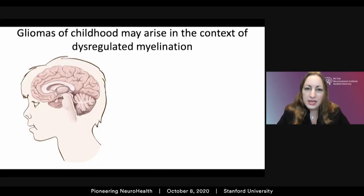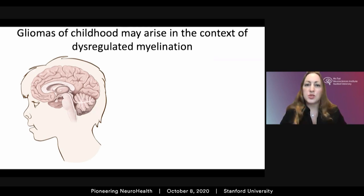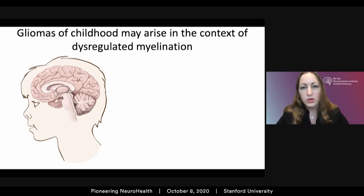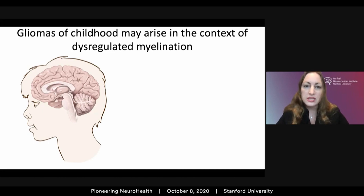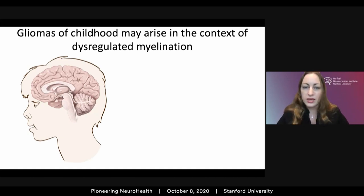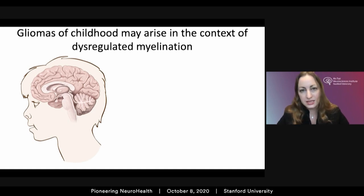Brain development is astounding and continues for many years after birth. In particular, myelination — the establishment of the myelinated infrastructure of the brain, so important for neuronal communication and neural circuit dynamics — develops over about 30 years. This is a protracted process following predictable chronological and topographical patterns. Understanding what regulates developmental and ongoing experience-dependent adaptive myelination is important and fascinating in its own right.